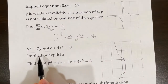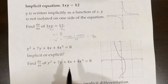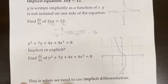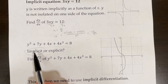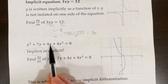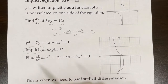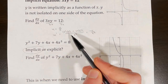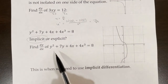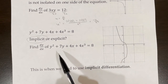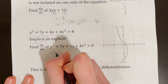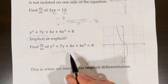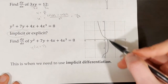What about this third equation: y squared plus 7y plus 4x plus 4x cubed equals 8? This is an implicit equation because y is written implicitly as a function of x — it's not isolated on one side. We have y terms and x terms all on the same side, kind of all mixed together. If we were going to use the same method as before, we'd first need to isolate y. But that's going to pose a challenge because this is an equation where it is difficult or impossible to isolate y. Like we could try pulling out a y, and then we'd have y plus 7, but even with algebraic manipulation we'd have a really hard time getting y all by itself.